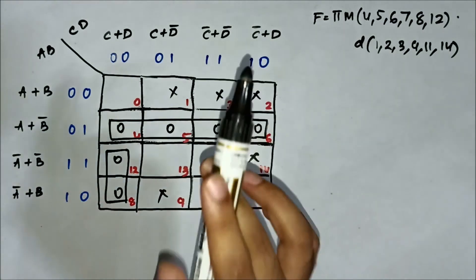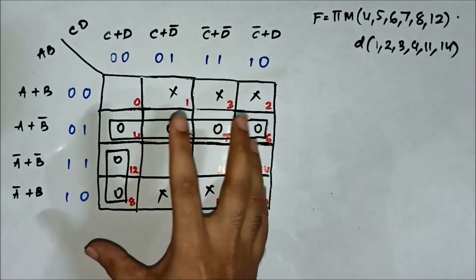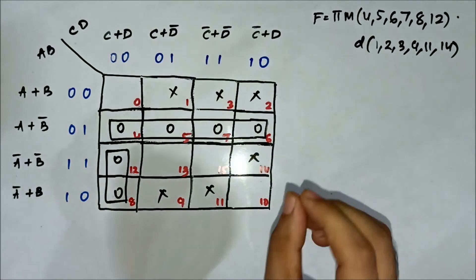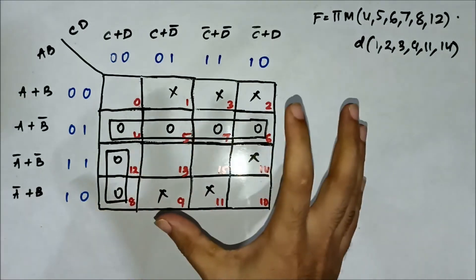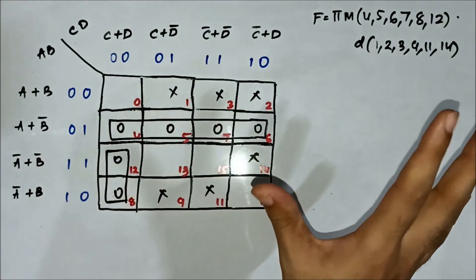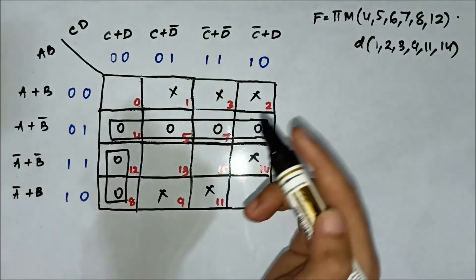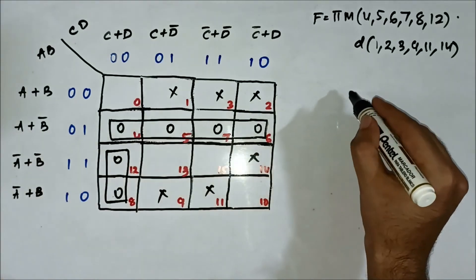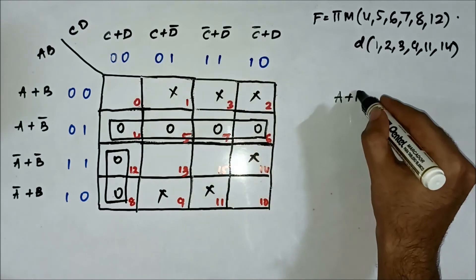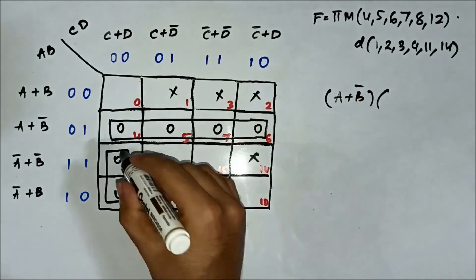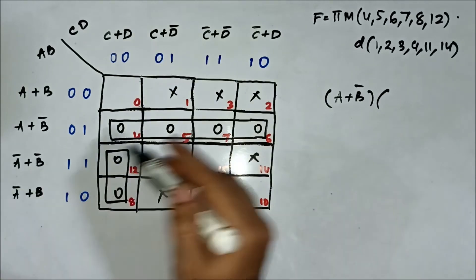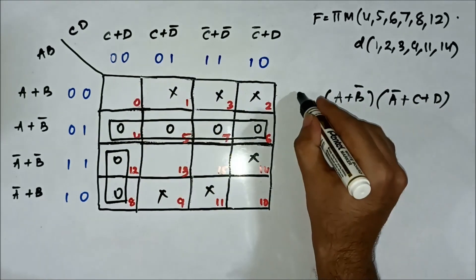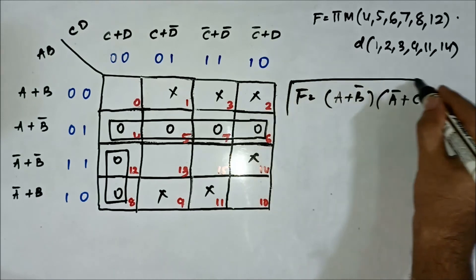The two 0-mark cells 8 and 12 will form a pair, so all the 0-mark cells have been covered. An interesting thing here is that none of the X-mark cells are involved in group formation — we simply leave them behind. For the quad, A+B̅ is the common variable on the horizontal side, with nothing common on the vertical side. For the pair, A̅ is common on the horizontal side and C+D is common on the vertical side.